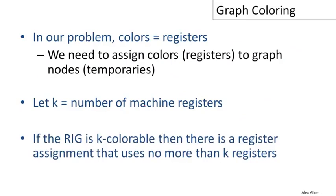If a register interference graph is K-colorable, then there's going to be a register assignment that uses no more than K registers.